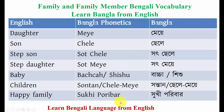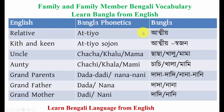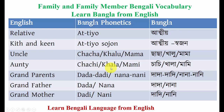Children means 'shantan' or 'chele mey.' Happy family means 'shukhi poribar' — 'shukhi' means happy. Relative means 'atiyo' and kin means 'atiyo sojan.' Uncle in Bengali is said differently: if he is the brother of my father, I call him 'chacha' or 'kalu'; if he is the brother of my mother, I call him 'mama.' Similarly, auntie is 'chachi,' 'kala,' or 'mommy.'